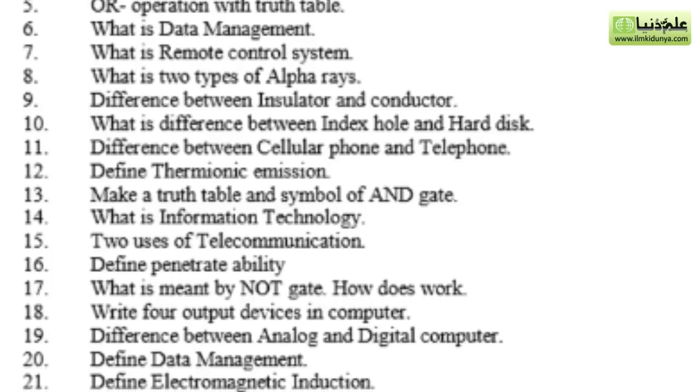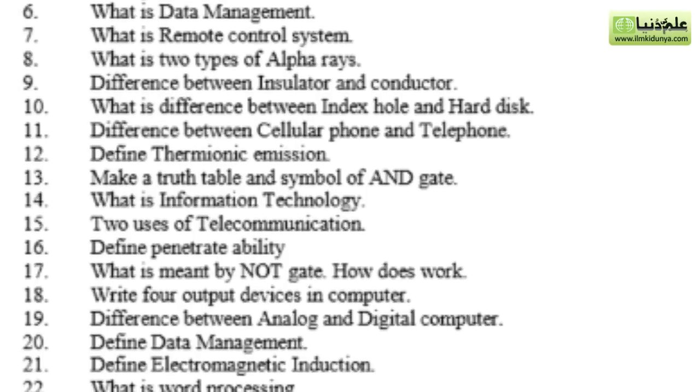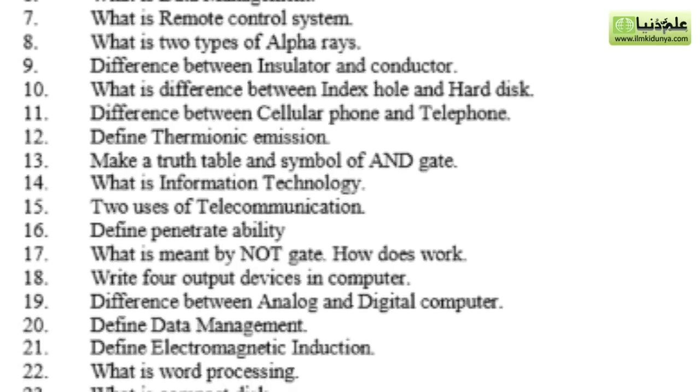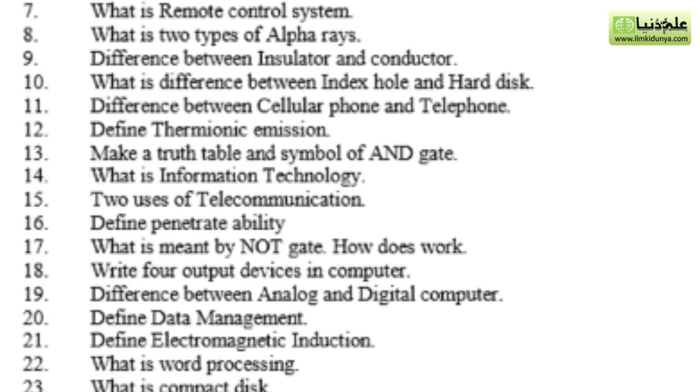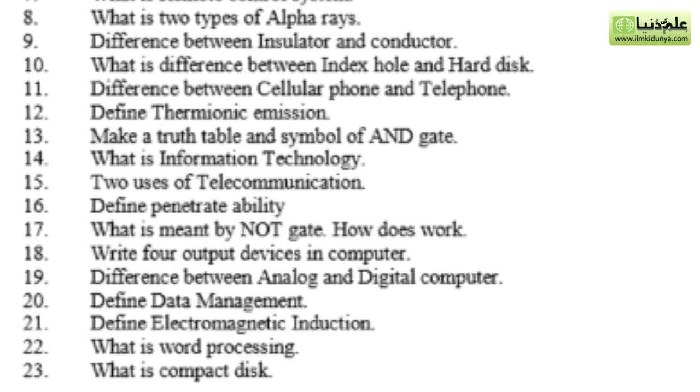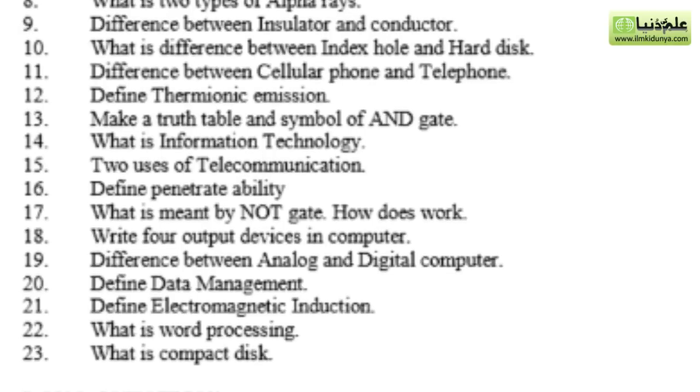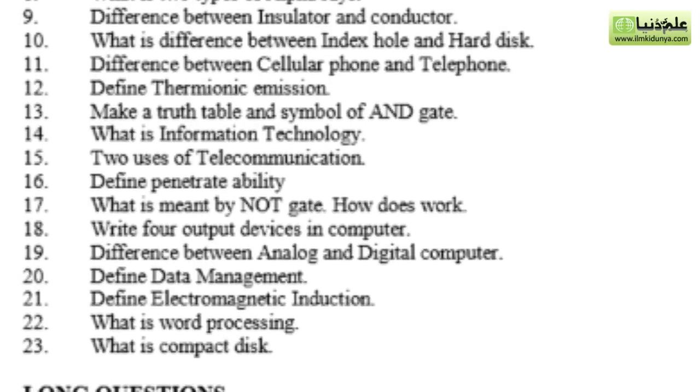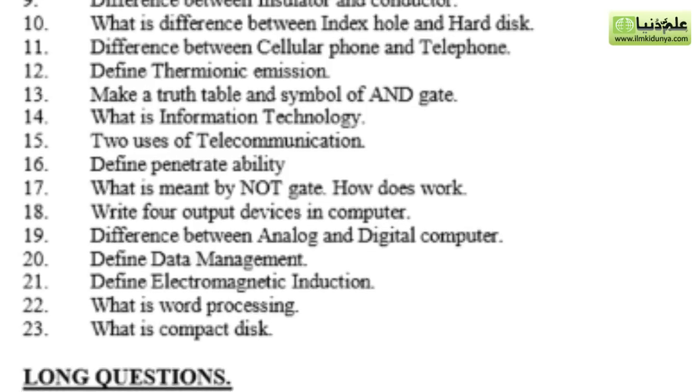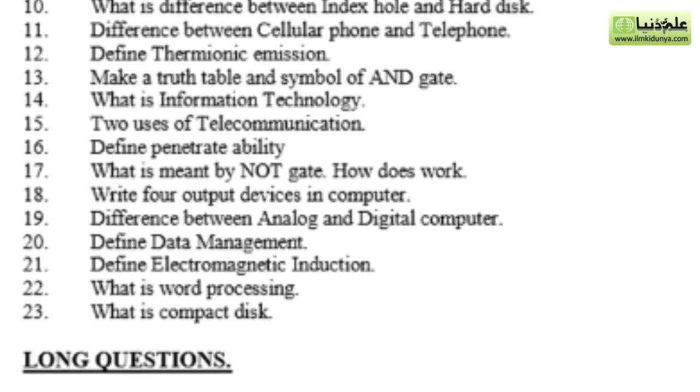13, you have truth table and symbol of AND gate. 14, what is information technology? 15, you have uses of telecommunication. 16, define penetrability. 17, what is meant by NOT gate, how does it work? 18, short question you have write four output devices in computer. 19, difference between analog and digital computer. 20, define data management. 21, define electromagnetic induction. 22, you have what is word processing? And last 23, what is compact disk?